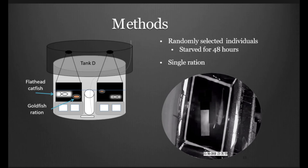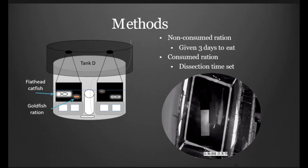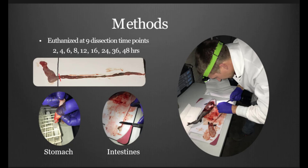We randomly selected individuals from our rearing tanks and placed them into these experimental aquaria. We starved them for a period of 48 hours just to ensure that their alimentary canal was clear of any food. We actually fed them a single ration of a goldfish of known wet weight. These fish were given three days to consume their meal. After three days of not eating, these fish were pulled from the experimental tank and placed back into the rearing tanks in a manner that we wouldn't actually test them again. Same with the goldfish. We gave them three days to eat because in literature, it's been seen that after a period of five days, it could start influencing the actual gastric evacuation rates of species. If the fish did consume the meal, we actually went ahead and set a dissection time. We chose nine different dissection times: 2, 4, 6, 8, 12, 16, 24, 36, and 48 hours.